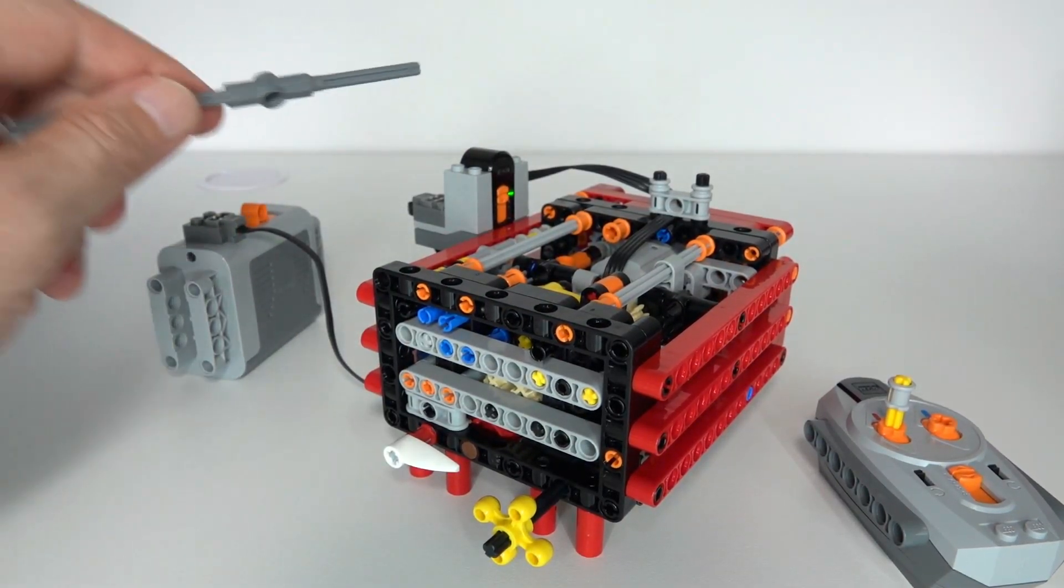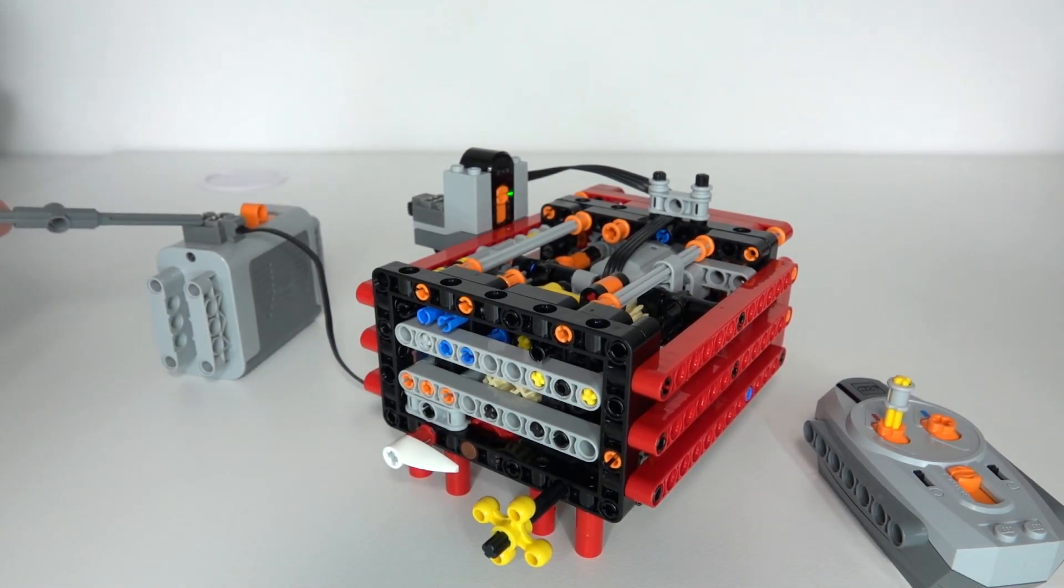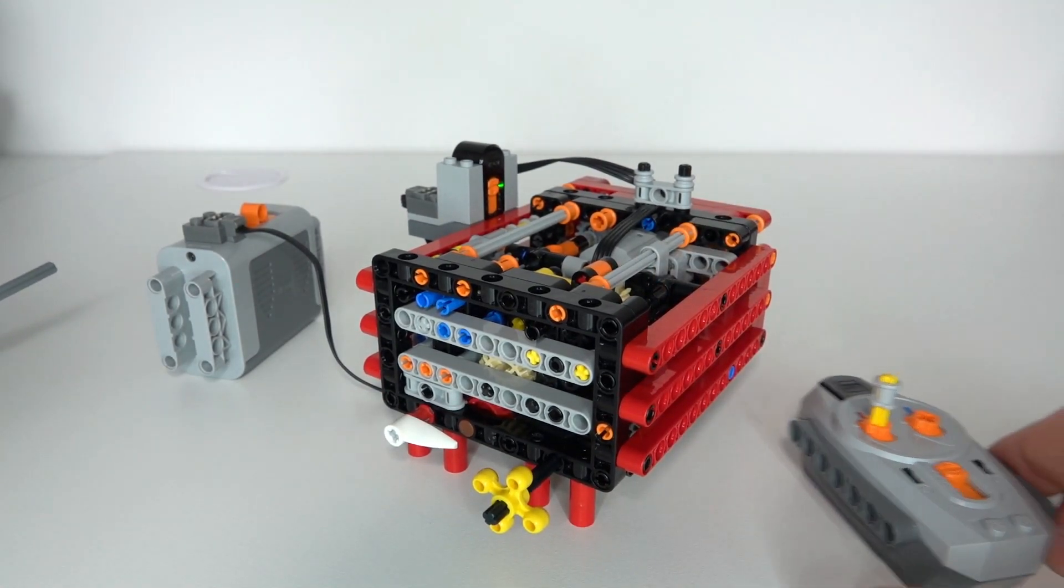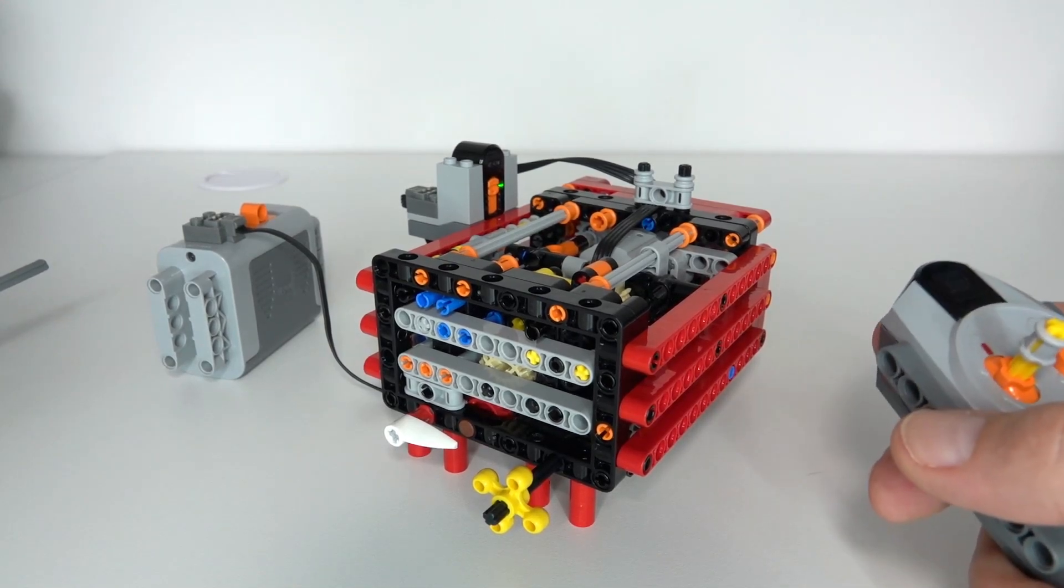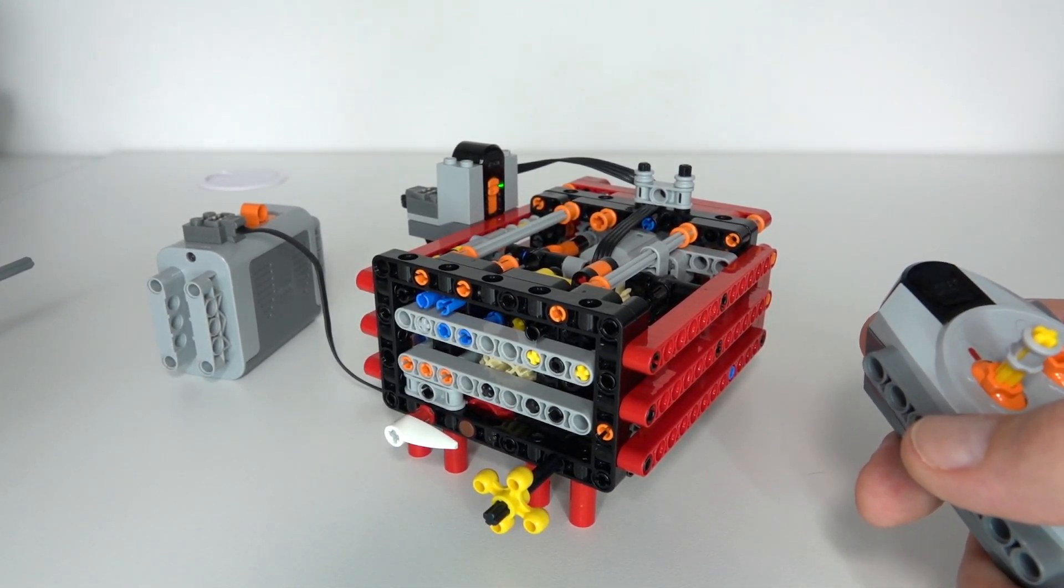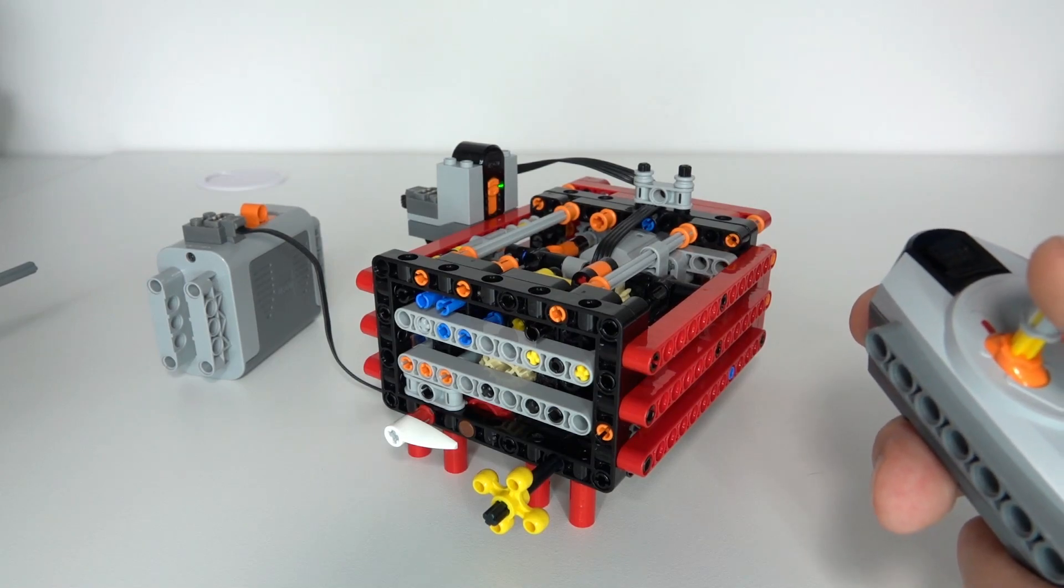So let's see the gearbox in action. I've connected to my remote control receiver. I've got the battery box here, and we've got the large power function motion in the center of the gearbox. I've got my remote control here. It's just got the one lever to be able to control the gearbox, be able to drive and change gears with just a one controller.